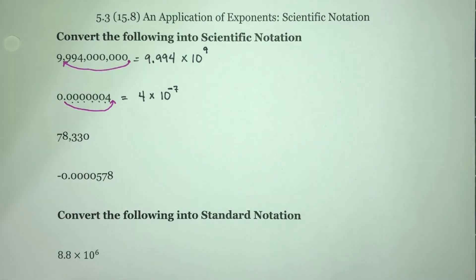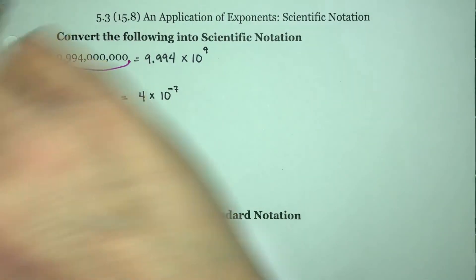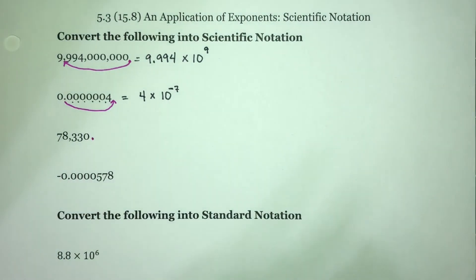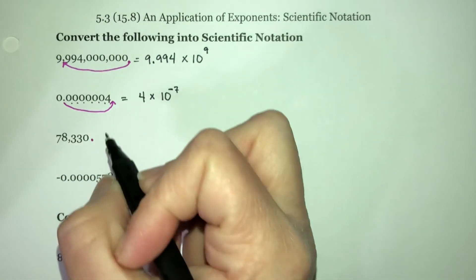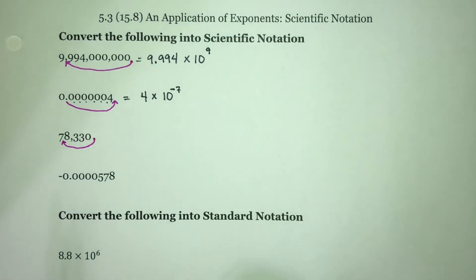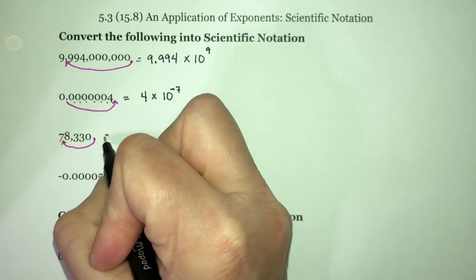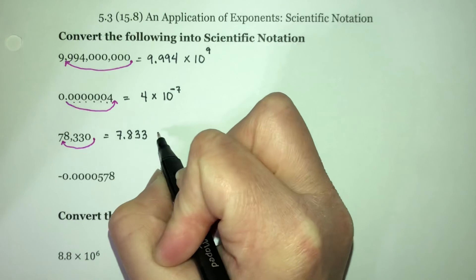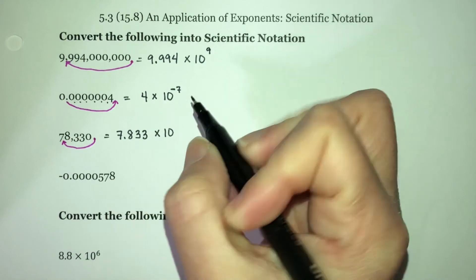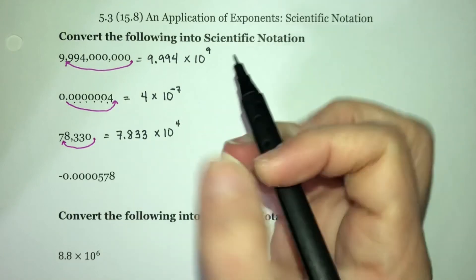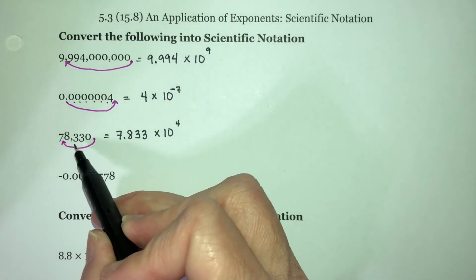For this one, my decimal point is here. I want to move it so that there's one number in front that's not a zero, so I'm going to move it all the way over to here. So this is 7.833 times 10. I've moved it one, two, three, four spots. This is smaller than this, so this needs to be making it bigger, so I use a positive exponent.